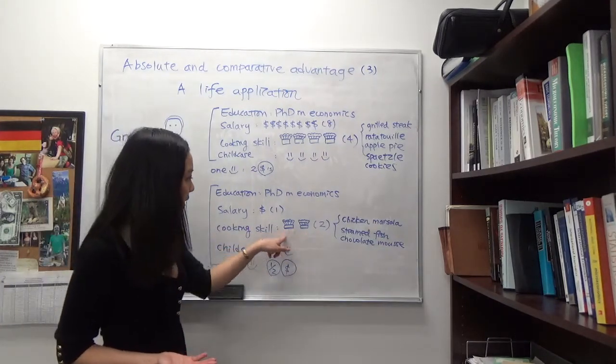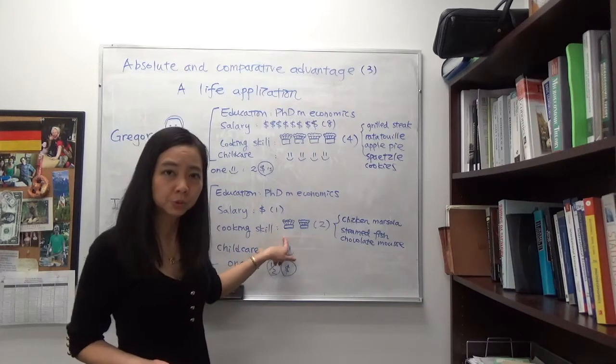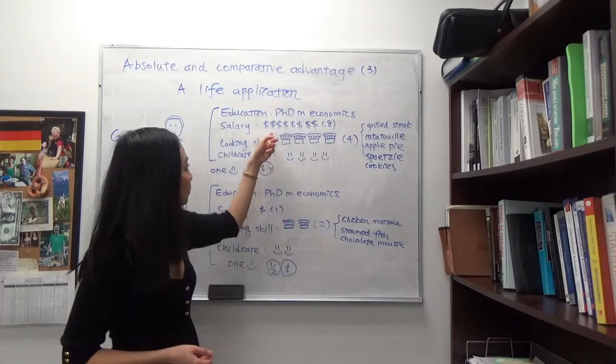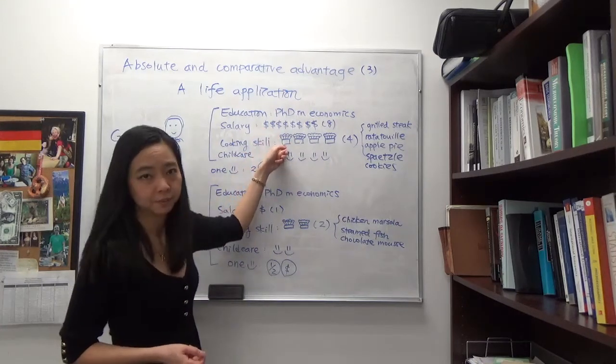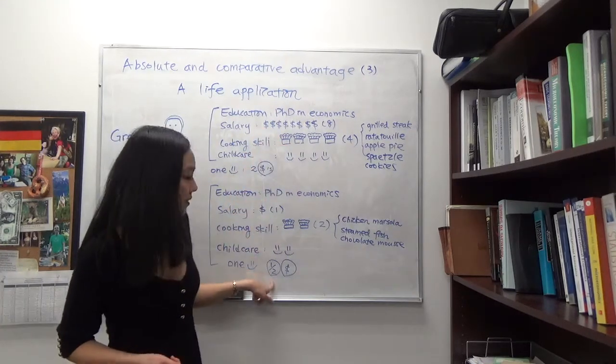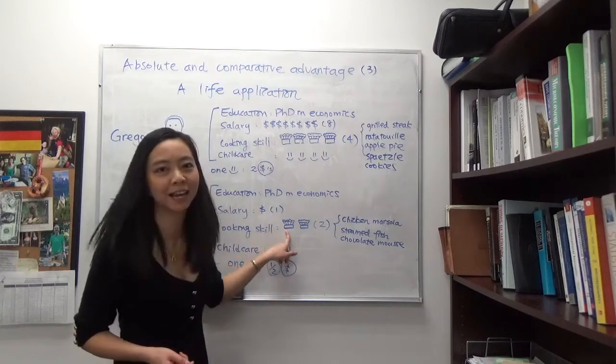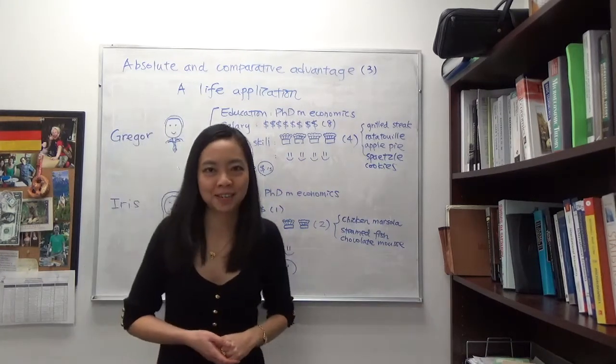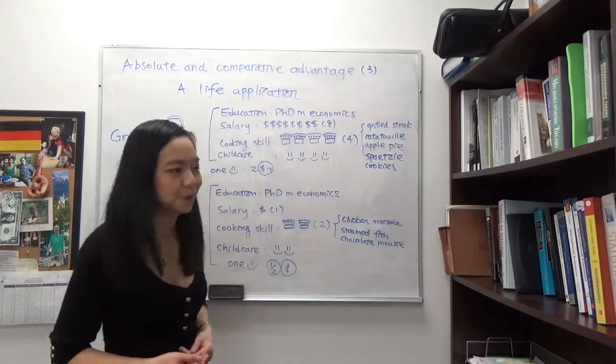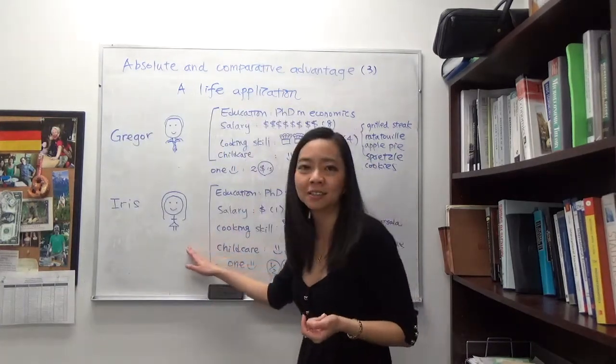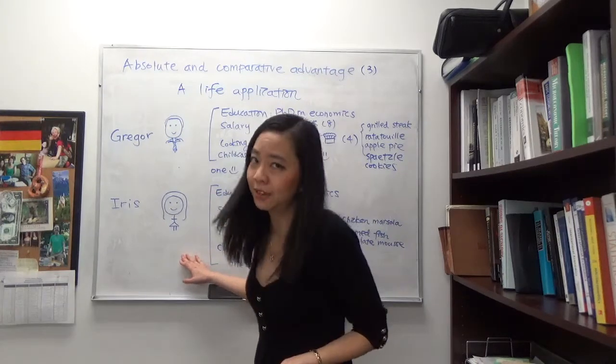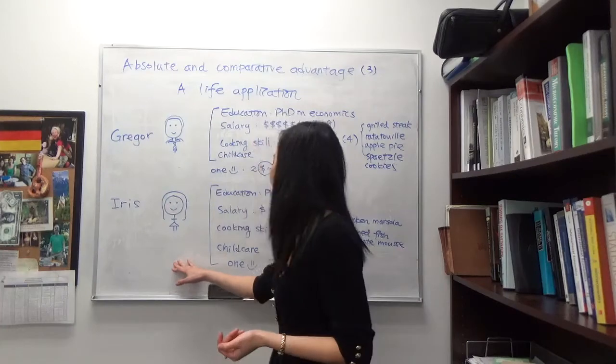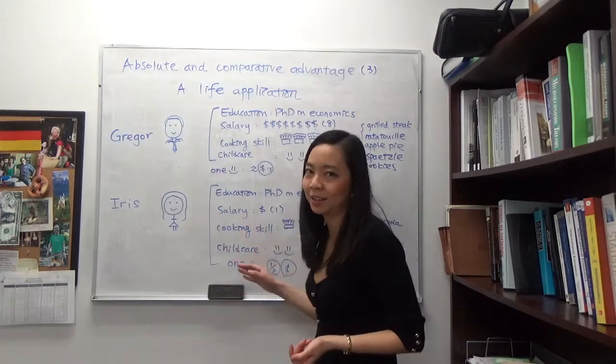When it comes to cooking, Iris will have a lower opportunity cost in providing cooking compared to Gregor for the same reason. Iris only has to sacrifice half a dollar sign to provide a chef hat, whereas Gregor will have to sacrifice two dollar signs to provide a chef hat. So even though Iris has an absolute disadvantage in everything, she still has a comparative advantage when it comes to childcare and cooking.